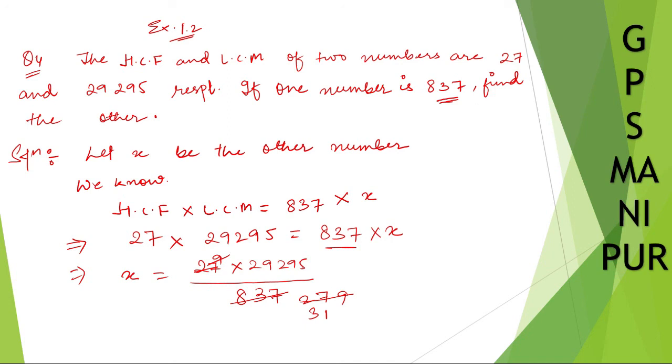So what is the answer? It will be 945. So if we divide these two numbers it will be 945. So this is your answer. Therefore, the other number is 945.